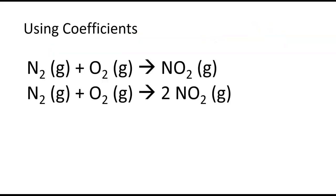So to balance, I need to put a coefficient of 2 in front of the NO2. Remember, I've got two N's and two O's on the left. When I add the 2 in front of the NO2, that's going to make it so I have two N's, two O's on the left, and now I'm going to have two N's and four oxygens on the right.